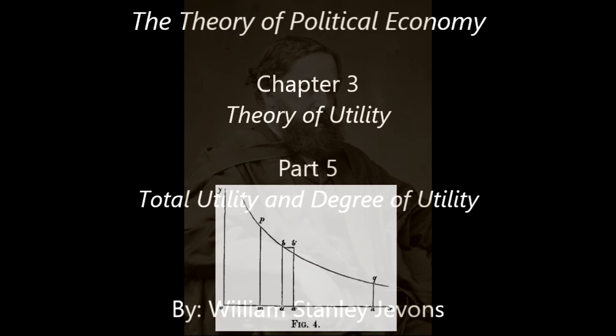We find these considerations fully illustrated by figure 4, in which oa represents x, and ab is the degree of utility at the point a. Now, if we increase x by the small quantity a1, or delta x, the utility is increased by the small rectangle abb1a1, or delta u. And, since a rectangle is the product of its sides, we find that the length of the line ab — the degree of utility — is represented by the fraction delta u over delta x.